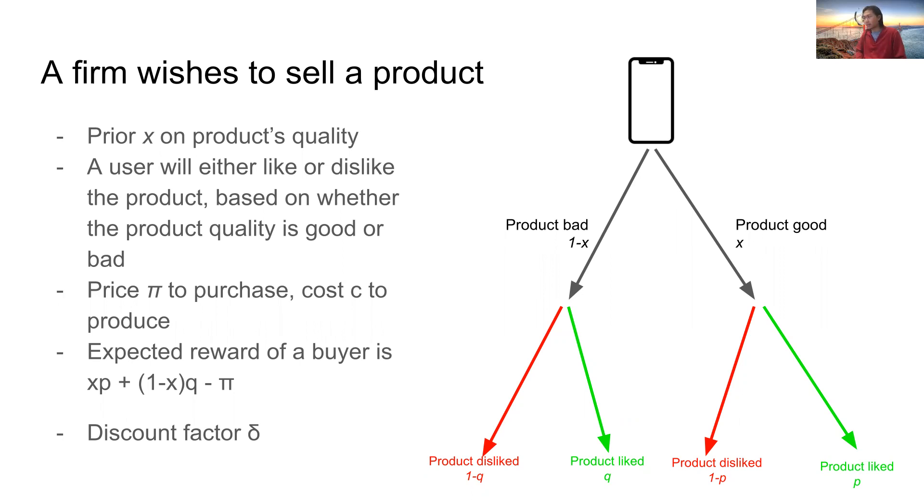For example, if the product is good, then the user will leave a like with probability P and a dislike with probability 1 minus P. But if the product is bad, then the user will like the product with probability Q, Q being less than P, and disliking the product with probability 1 minus Q.